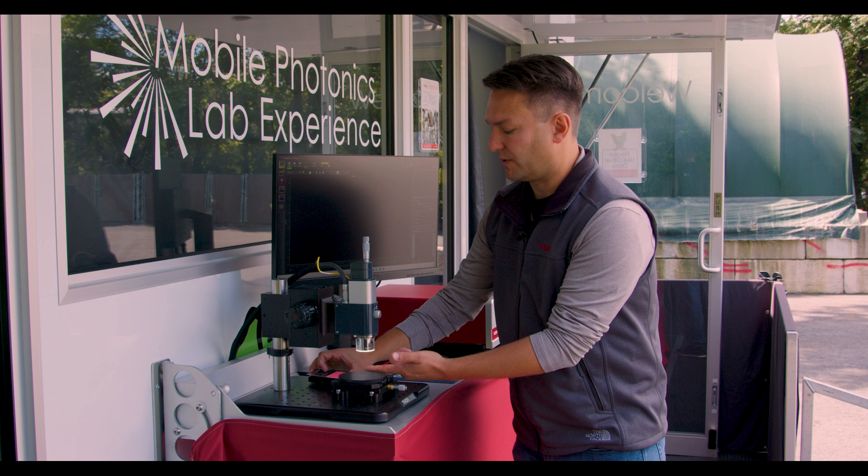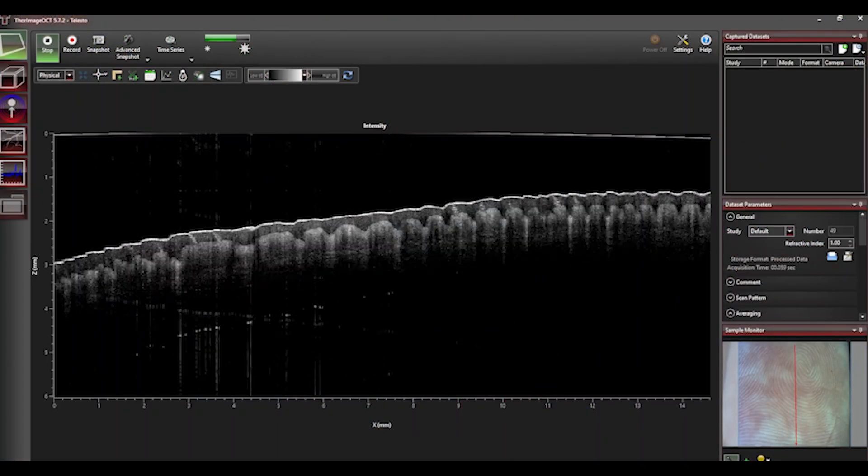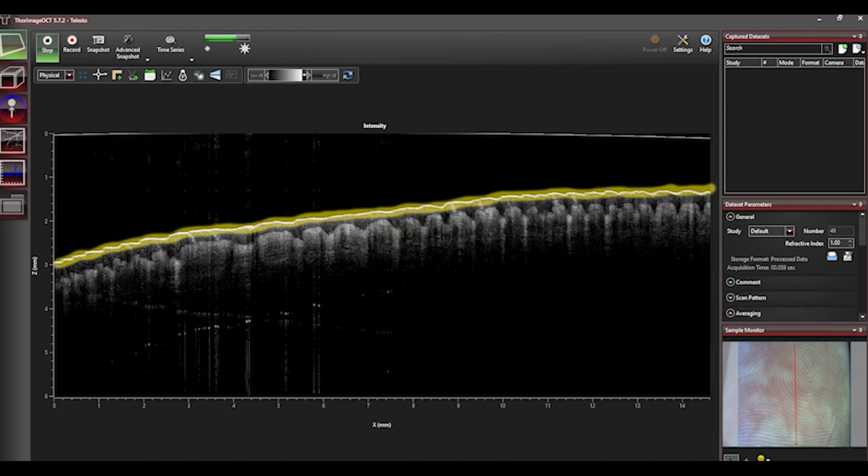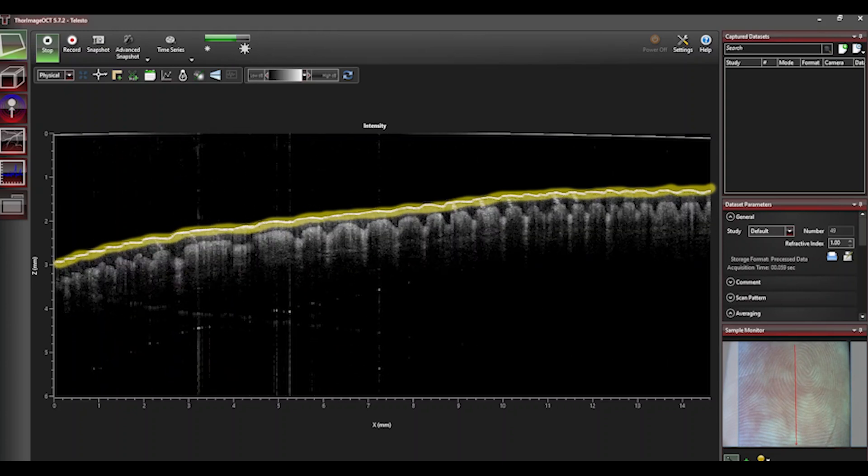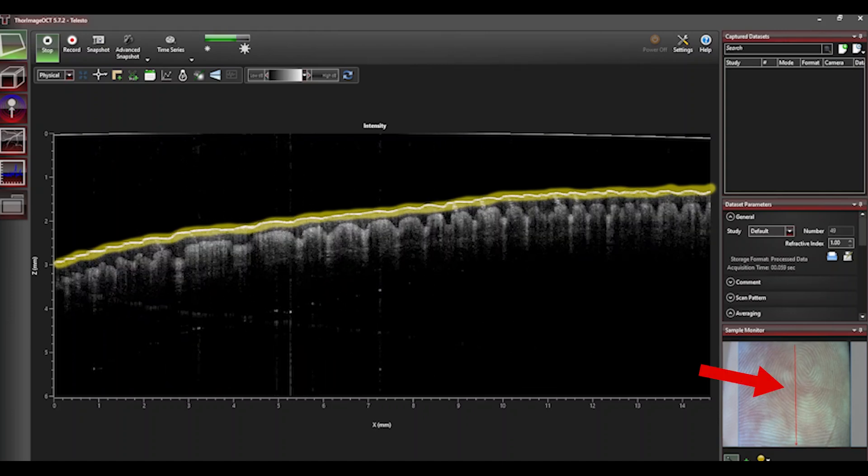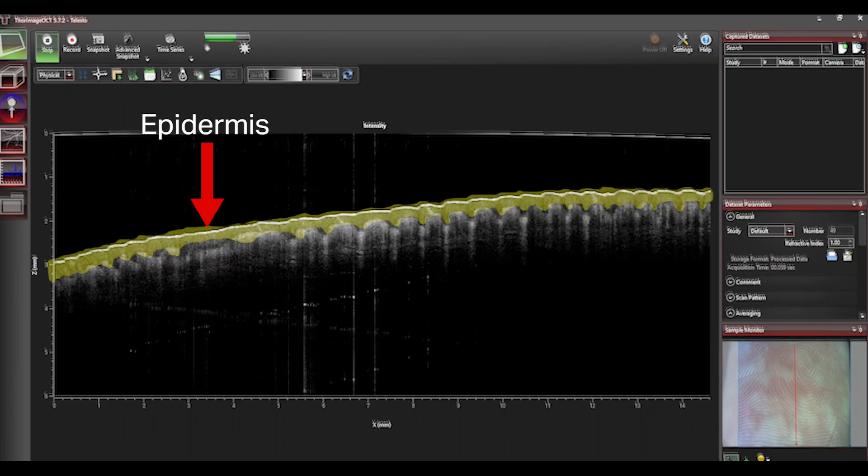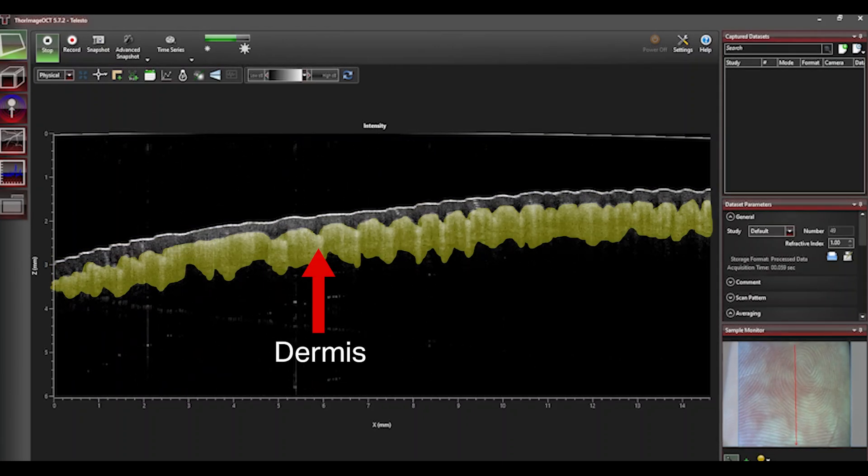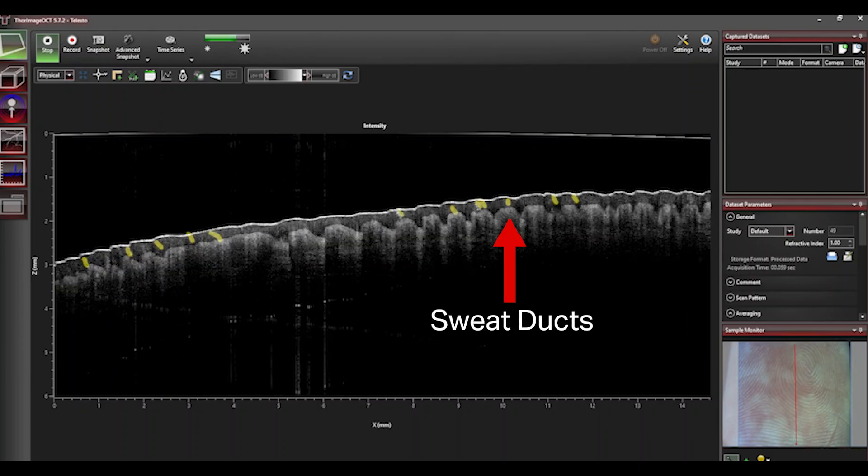Now if I take this away and I put my finger underneath, the very bright white line on top is the very top layer of skin that you see when you look at your finger. So the peaks and the valleys are the grooves and the fingerprint. The very top layer of skin is called the epidermis, the bottom is called the dermis, and then those little squiggly lines that we see in there are sweat ducts.